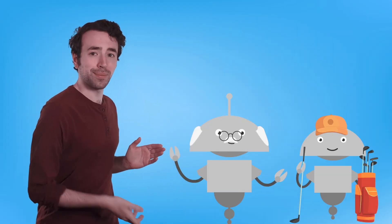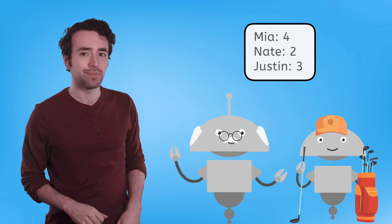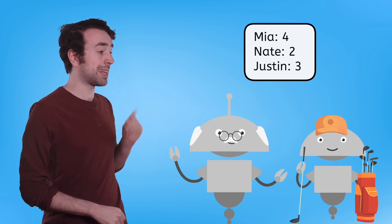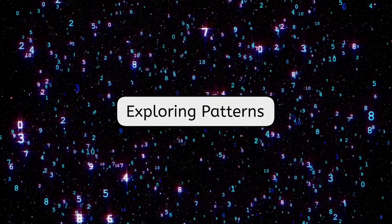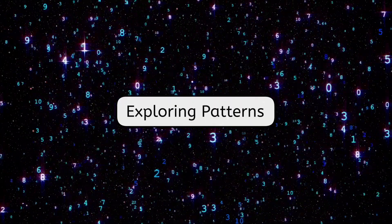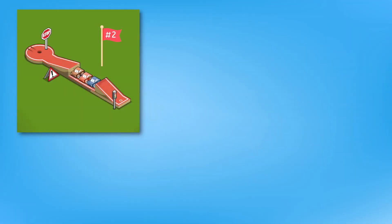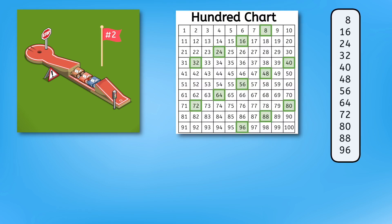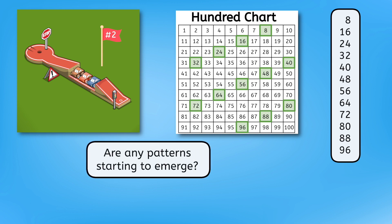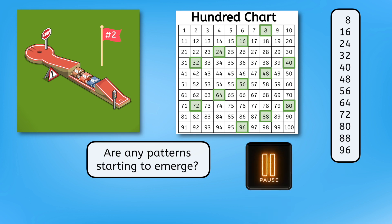Just like Mia's family, related fact families are super helpful. Mia's score is four for the first hole, Nate's score is two, and my score is three. Let's head to the next one. While Grandpa Nate takes his turn, let's examine the multiples of eight on the hundred chart. Are any patterns starting to emerge? Check out how the digits change from one multiple to the next, or the way they shift on the hundred chart. Pause and record at least one observation or pattern in your guided notes.